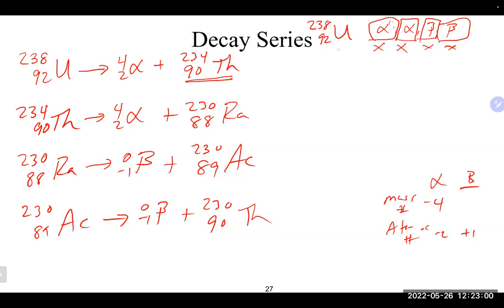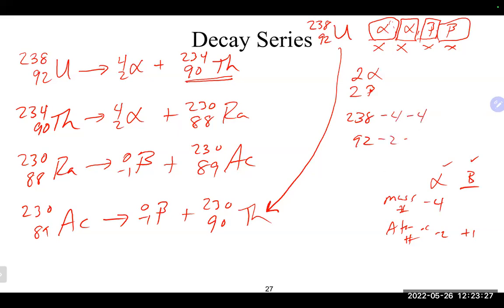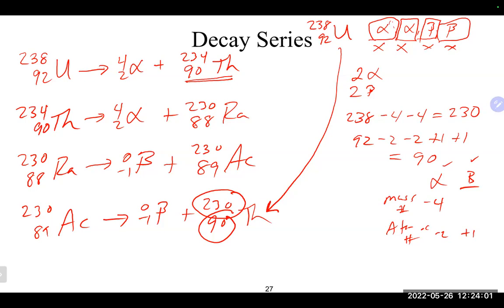Using the shortcut for that same alpha/alpha/beta/beta decay series starting with uranium-238 (mass 238, atomic number 92): two alphas subtract 8 from mass (238 − 8 = 230) and subtract 4 from atomic number (92 − 4 = 88). Two betas add 2 back to atomic number (88 + 2 = 90). Final result: mass 230, atomic number 90—thorium-230, matching the step-by-step result.